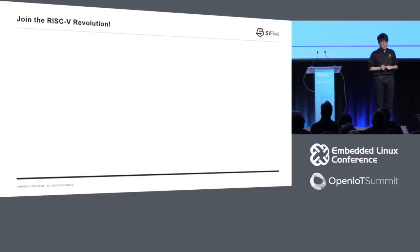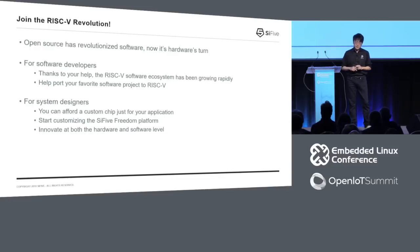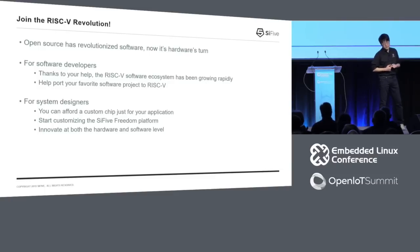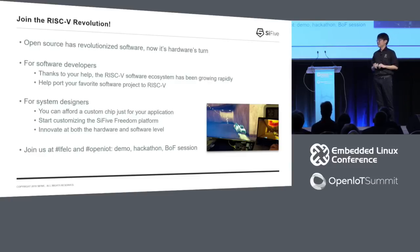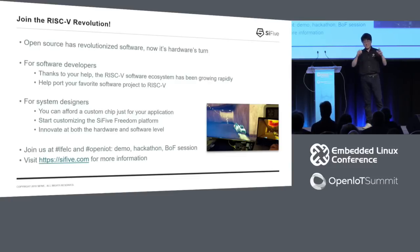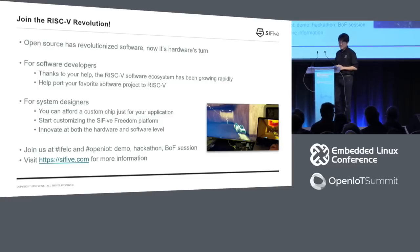To conclude: please join the RISC-V revolution. Open-source has revolutionized software — now it is hardware's turn. For software developers, thanks to your help the RISC-V software ecosystem has been growing rapidly; continue your work and help port your favorite software projects to RISC-V. For system designers, now you can afford a custom chip just built for your application — start customizing the SiFive Freedom Platform and innovate at both the hardware and software level. Join us at the hackathon, BOF sessions, as well as our demo session, where we have multiplayer Quake 2 running on RISC-V connected to an x86 machine. As a startup, we're also hiring aggressively — visit sifive.com for more information. Thank you very much.